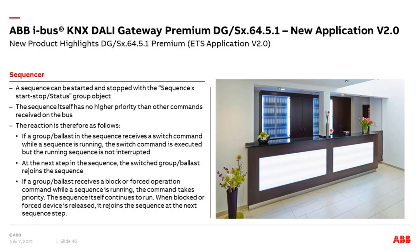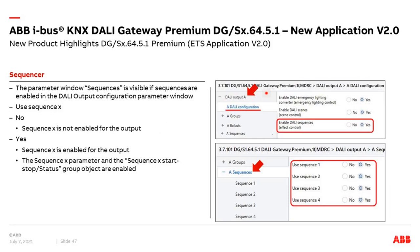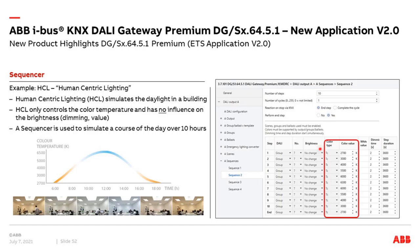A typical application is in a hotel lobby where colors change slowly between red, green, blue, and purple. To activate sequences in the ETS, you go to the main menu, Output A, Configuration, and then activate sequences — yes or no — just as you do for scenes, emergency light converters, groups, or individual ballasts. If you enable sequences, you find the four sequencers and can enable all four, or just one, two, or three.